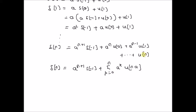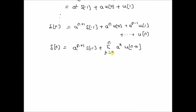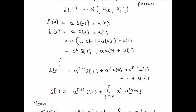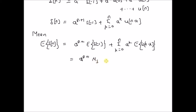This can be clearly rewritten as S of n equal to A power n plus 1 into S of minus 1, plus a summation k equal to 0 to n of A power k multiplied by U of n minus k. That is, when k equal to 0 we have the first term, k equal to 1 we have the next term, and so on up to k equal to n giving A power n into U of 0. So this is the final closed form expression for S of n. From this expression, we can derive the mean: the expectation of S of n equals A power n plus 1 into expectation of S of minus 1, plus the sum k equal to 0 to n of A power k into expectation of U of n minus k. This equals A power n plus 1 times mu S, since the expectation of U of n minus k is equal to 0.